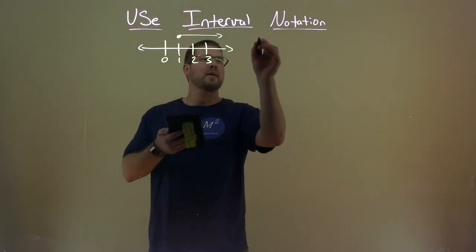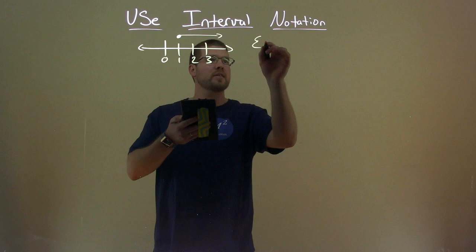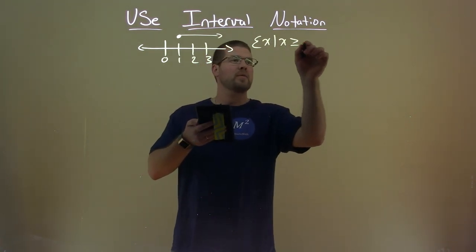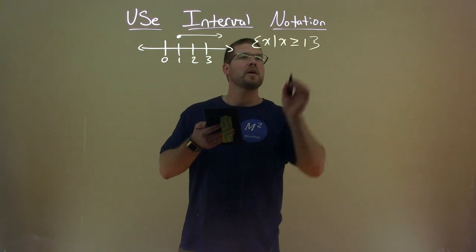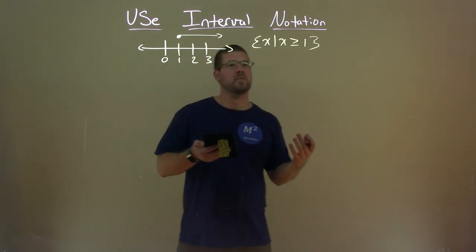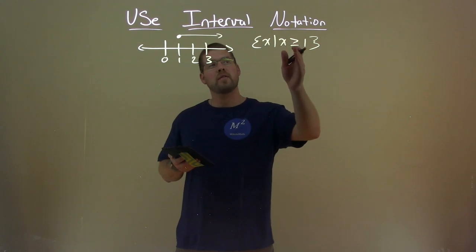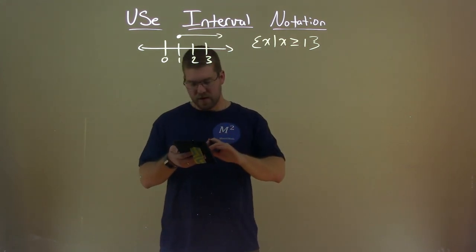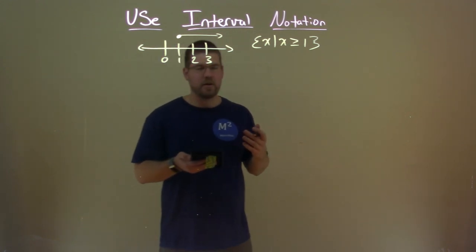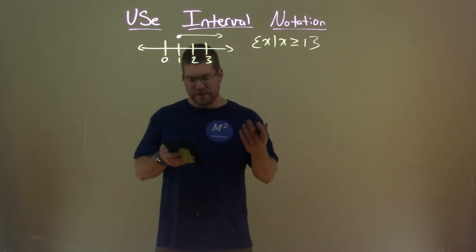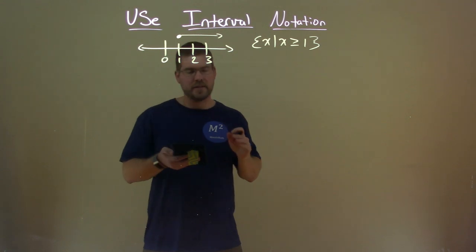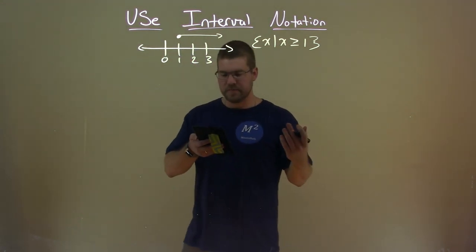So a lot of times we would see that written as: x such that x is greater than or equal to 1. So what they're saying is x is a set of real numbers such that x is greater than or equal to 1. So we have a large number of different ways that we can write different variables in what we call set builder notation and interval notation.